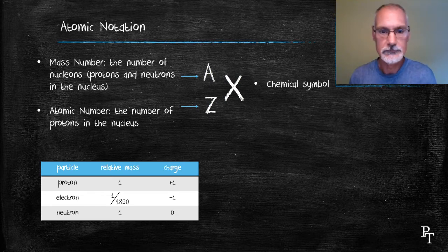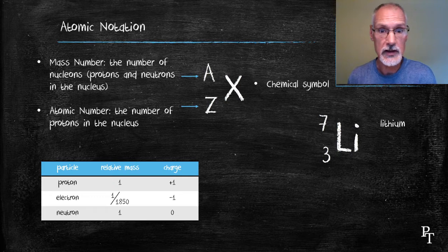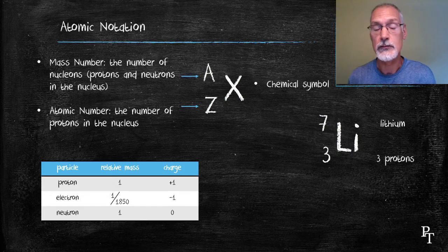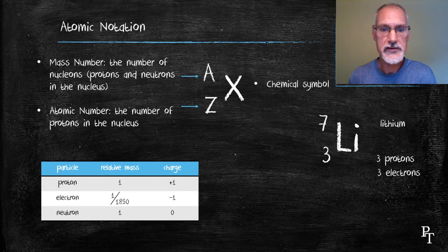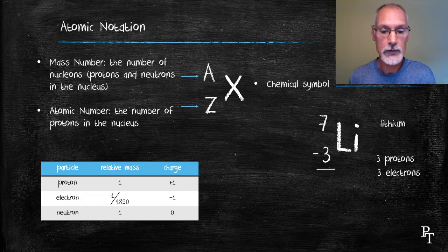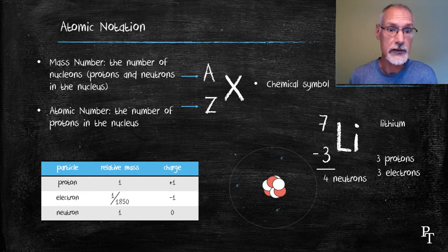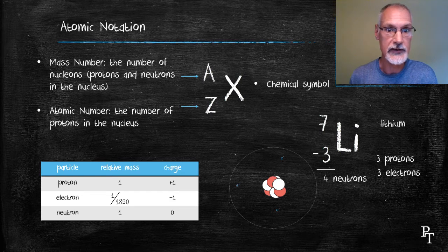Let's look at an example. Li-7 can represent lithium. The three tells me there's three protons that are present, and being a neutral atom, it would also contain three electrons. Now, to deduce the number of neutrons, knowing that there are seven particles in the nucleus, three of them protons, I can deduce then that there must be four neutrons. Here's a picture, then, of what that atom would look like. Notice the nucleus here is somewhat over-exaggerated in size, would be a small fraction of what is shown here.